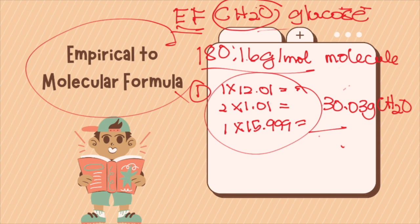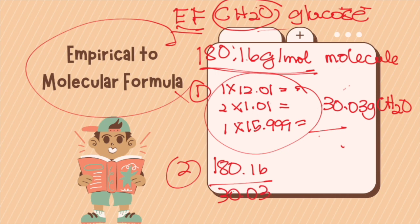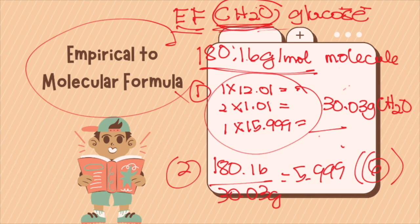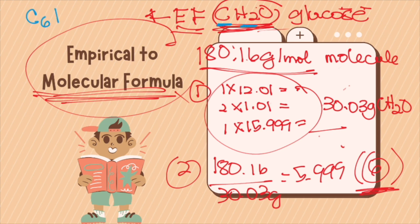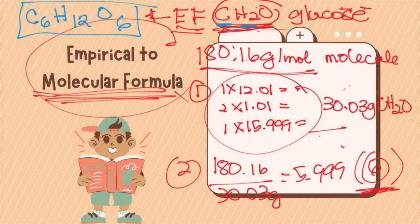We then divide the molar mass of the molecule, 180.16, by the empirical formula mass of 30.03 grams, which gives 5.999, rounded to 6. Since the ratio is 6, we multiply each subscript in the empirical formula CH2O by 6. C becomes 6, H becomes 12, and O becomes 6. Therefore, the molecular formula for glucose is C6H12O6, having an empirical formula of CH2O.